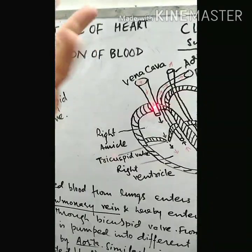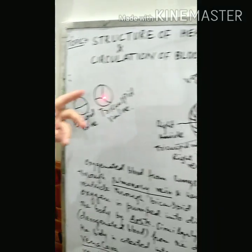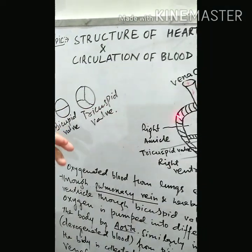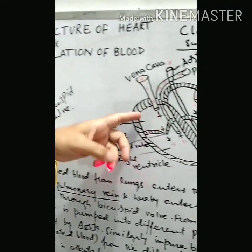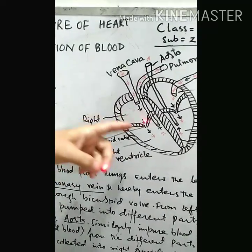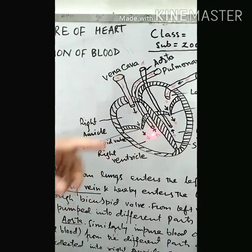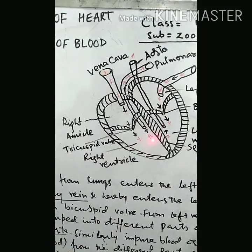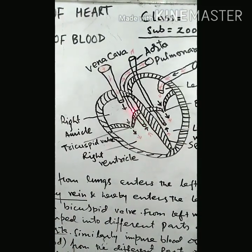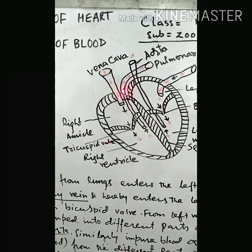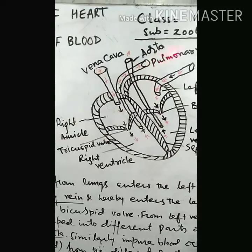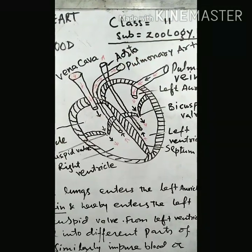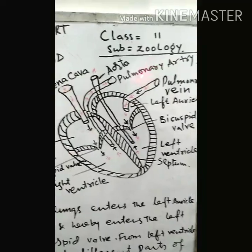The tricuspid valve means the valve has three flaps — one, two, and three. It has three flaps. Now blood from the right auricle enters the right ventricle. From the right ventricle, blood is pumped into the lungs for oxygenation. This artery is called the pulmonary artery.